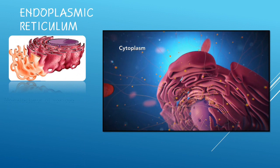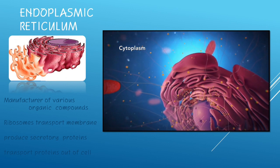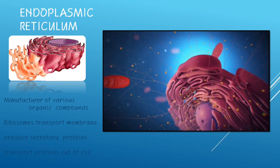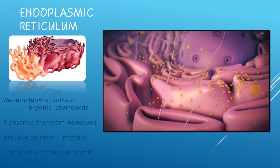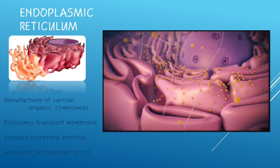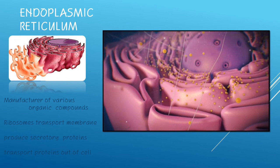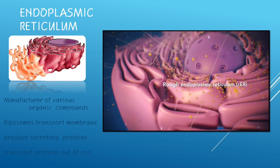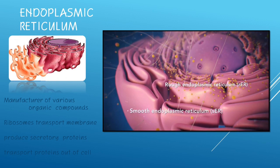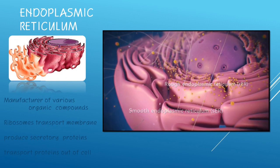Endoplasmic reticulum, the manufacturer of various organic compounds. Ribosomes transport membrane. It produces secretory proteins and it transports proteins out of the cell. Outside the nucleus, ribosomes float around a gel fluid called cytoplasm. Ribosomes will freely float or may attach to the endoplasmic reticulum, which are of two types.